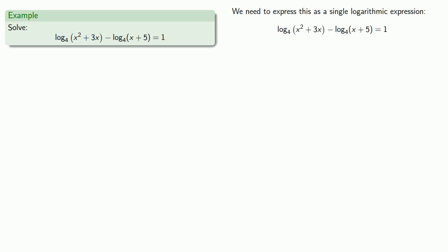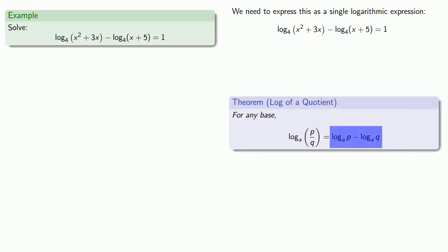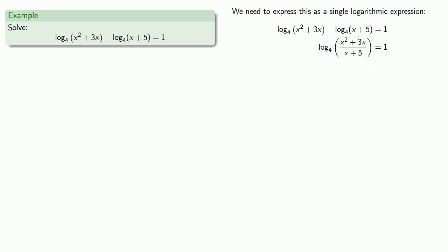The first thing to notice is that this is a difference of logs. We pull in our rules of logs and see that a difference of logs is the same as the log of a quotient. So we can rewrite this as the log of x squared plus 3x over x plus 5, and we're still equal to 1.